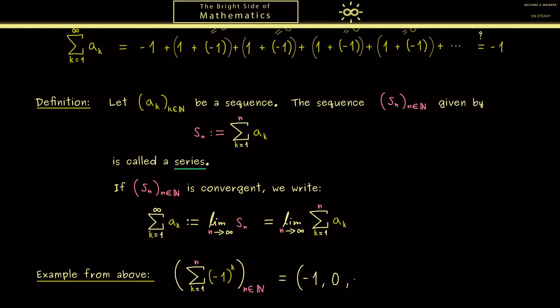And then for n is equal to 3 we get minus 1 again. Then this simply repeats with this pattern. And here you know this sequence is not convergent.